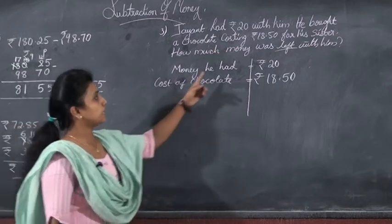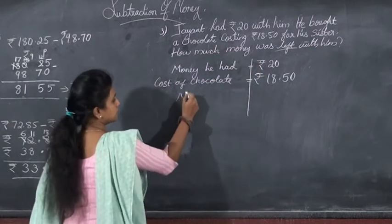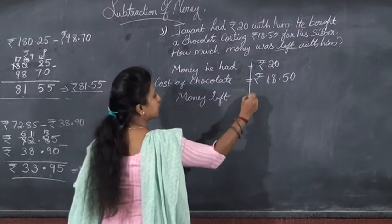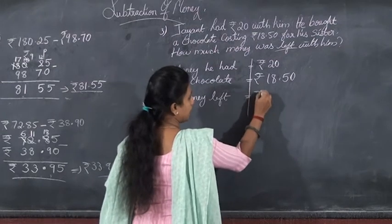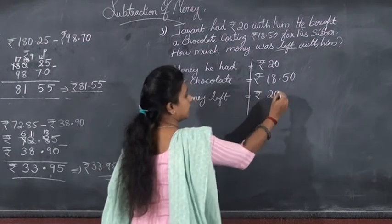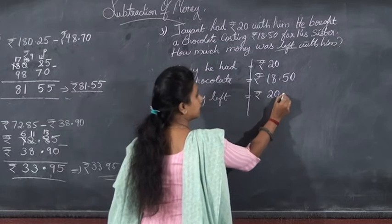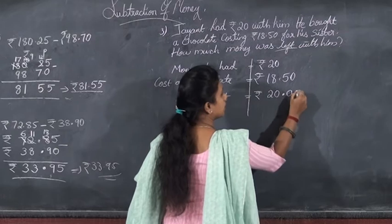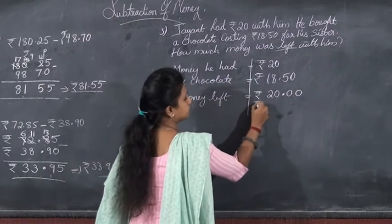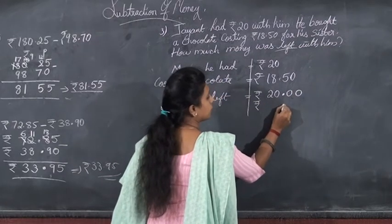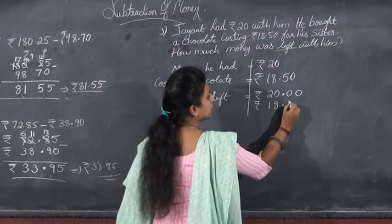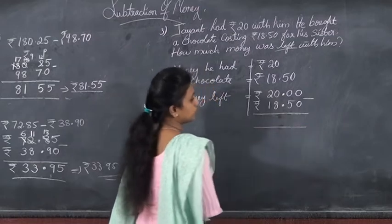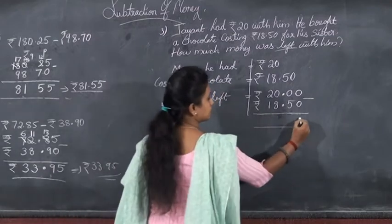Then money that left, that is money left is equal to, money left is equal to, just subtract the numbers. That is rupees 20, then put it down here, then next put one dot one below the other, and write the number 18 then 50. Then subtract the numbers. Okay, what is 0 minus 0? Answer is 0.